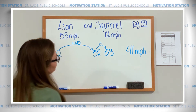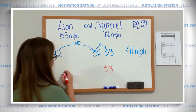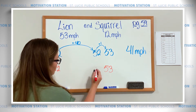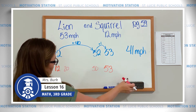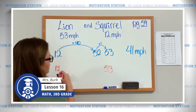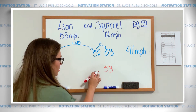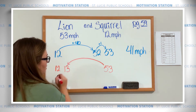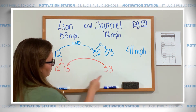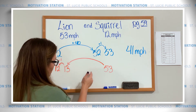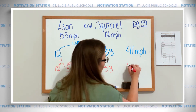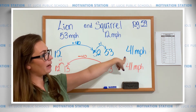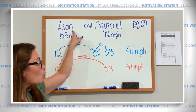I can show this as subtraction too. Starting at 53 to get to 12 — I'll count down by tens: 43, 33, 23, 13. That would be a big jump back to 13 of minus 40, and then a little jump to 12, which is minus 1. So I have 41 miles per hour. My answers match — that's always a good sign. The lion is 41 miles per hour faster than the squirrel, or the squirrel is 41 miles per hour slower than the lion.